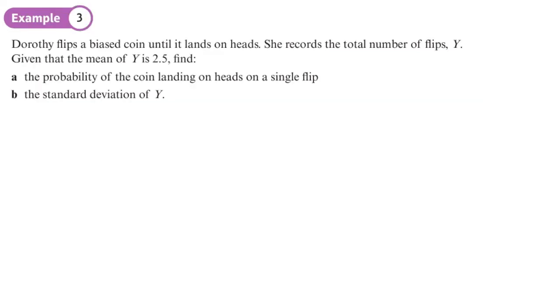"Dorothy flips a biased coin until it lands on heads." So there we know it's a geometric distribution, yeah? You're doing something until success occurs. She records the total number of flips, Y. Given that the mean of Y is 2.5...